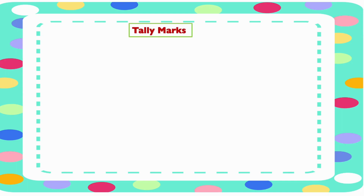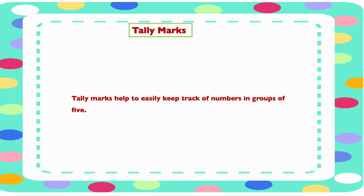In this video we are looking at tally marks. Tally marks help to easily keep track of numbers in groups of five. It helps to give a clear view of data. Data is represented using straight lines and a slant line. Four straight lines and one slant line makes one group. Now let's look at how numbers are represented using tally marks.